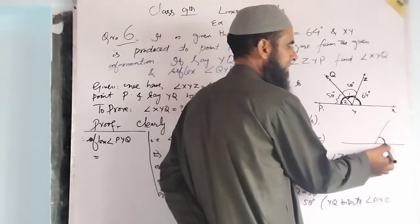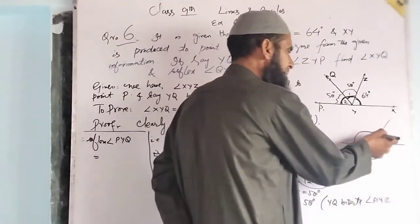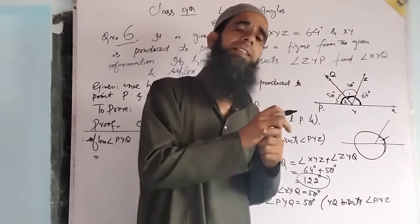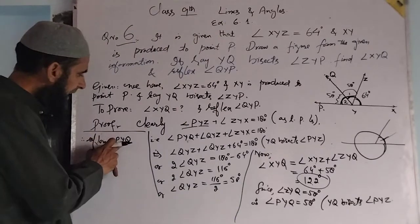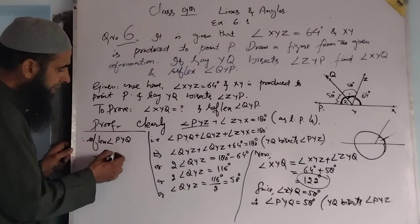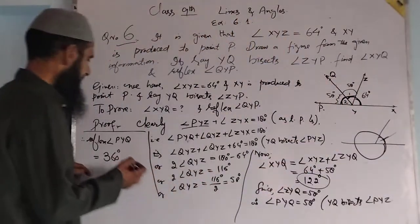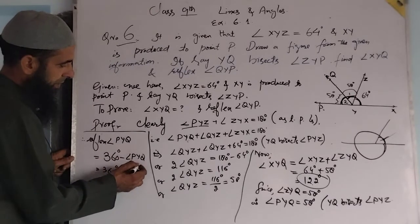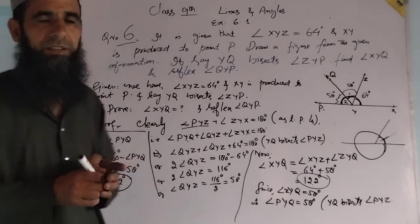The reflex angle QYP can be found by taking the complete angle minus the given angle. So reflex angle QYP equals 360 degrees minus angle PYQ, which equals 360 minus 58. You can easily calculate this: reflex angle QYP equals 302 degrees.